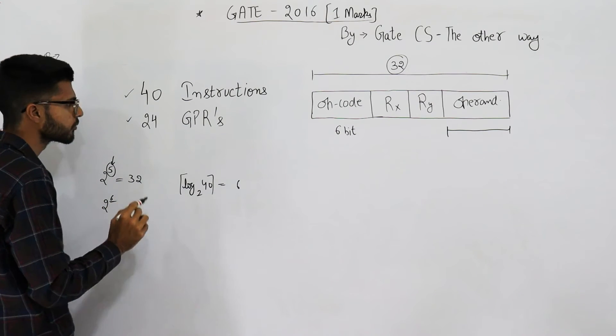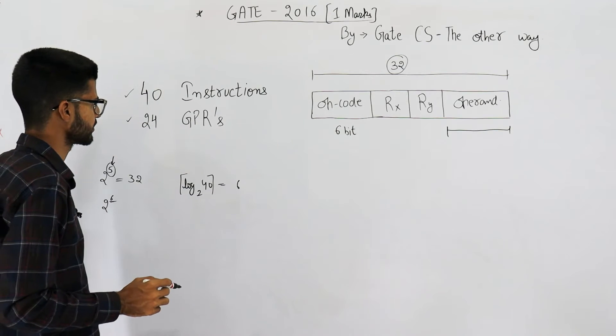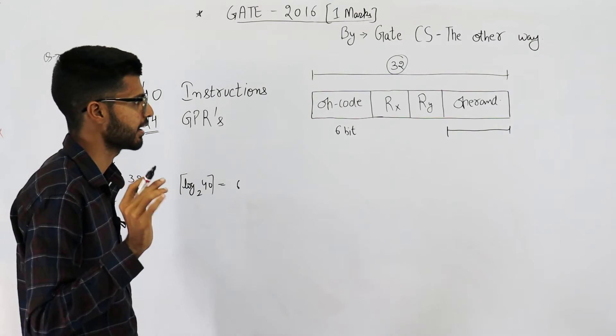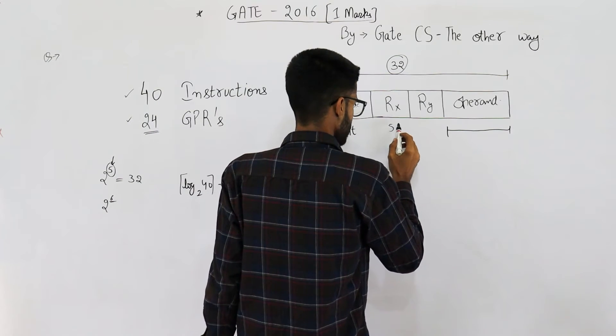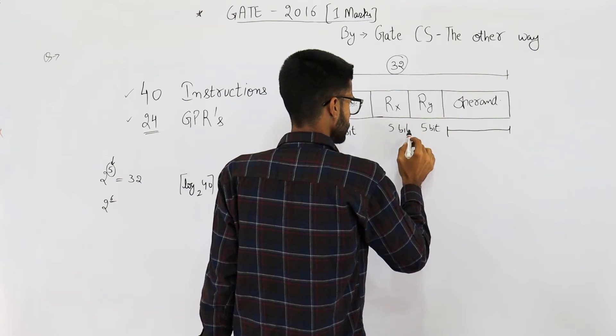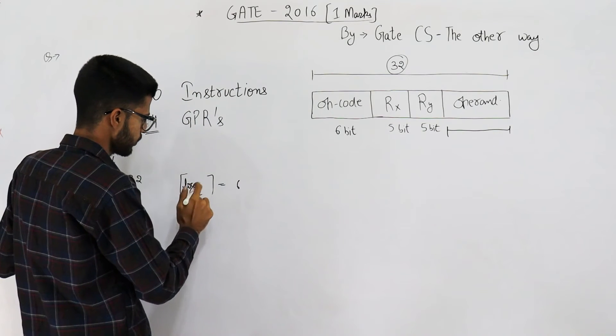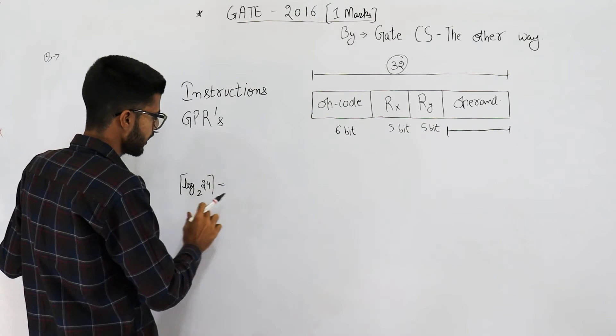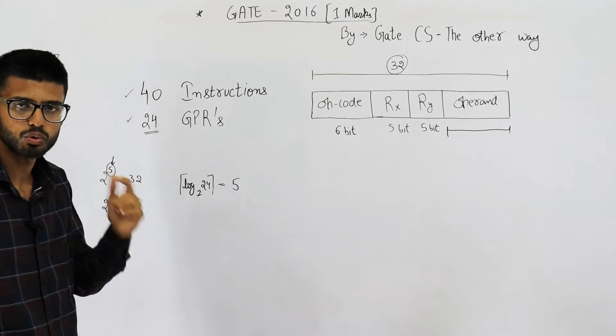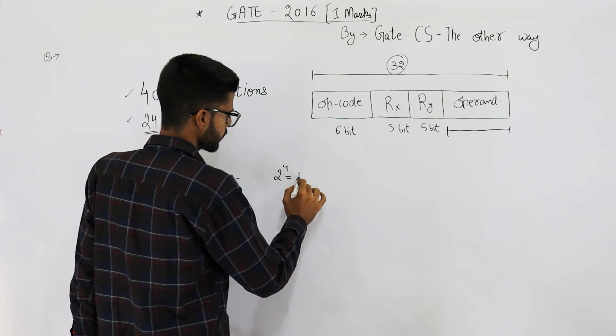So this is 6 bits. Then you have 24 general purpose registers, so this means here you need to have an address of 5 bits. This is 5 bits and this is also 5 bits. Why 5 bits? Similarly, you just write here 24, and log 24 to the base 2 ceiling is 5, because log 24 will be 4 point something.